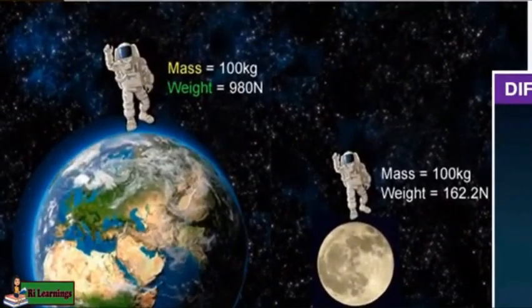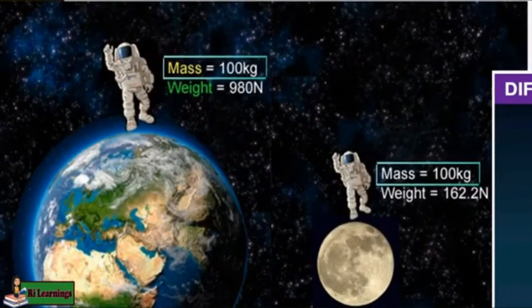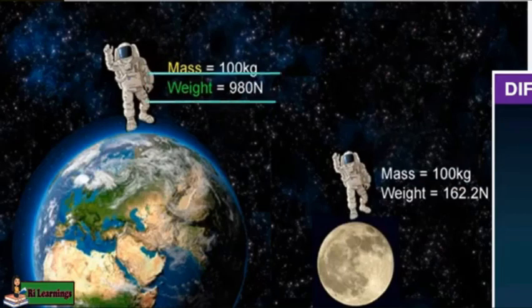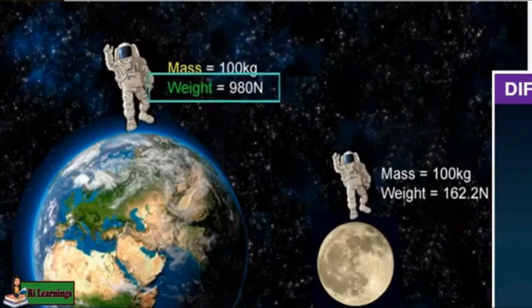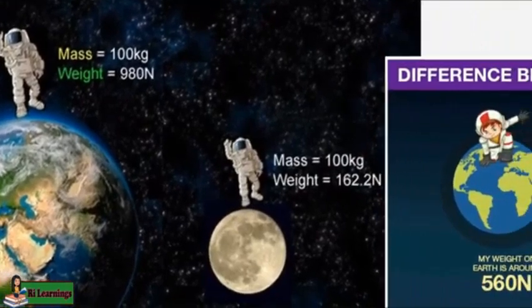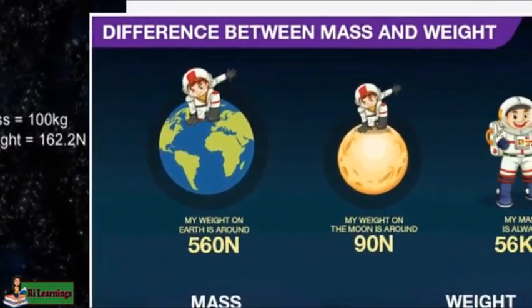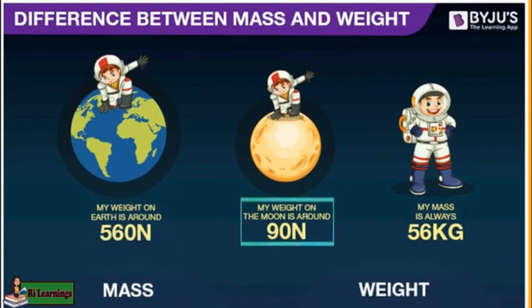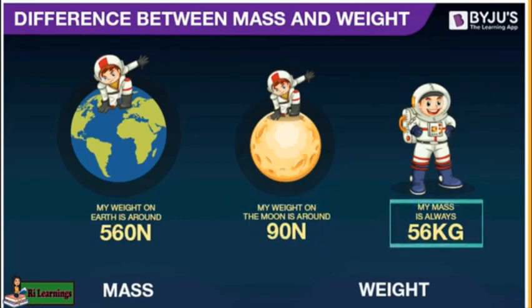Take a look at the picture. The mass of an object on Earth and the moon is still the same. The weight of the man on Earth is 980 Newton, while the weight of the man on the moon is 162.2 Newton. Another example is the weight of the boy on Earth is around 560 Newton, while its weight on the moon is only around 90 Newton, but its mass is always 56 kilograms.